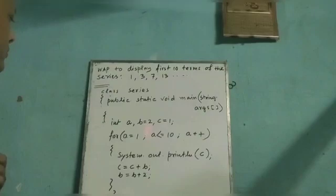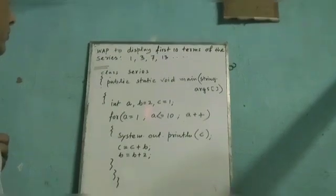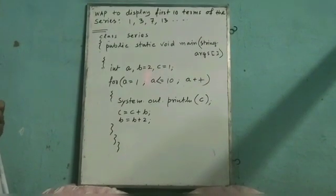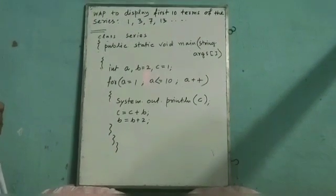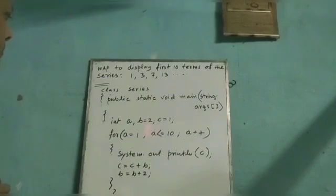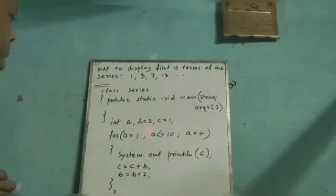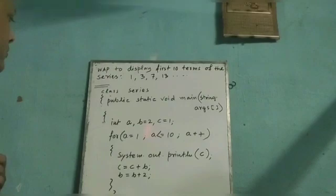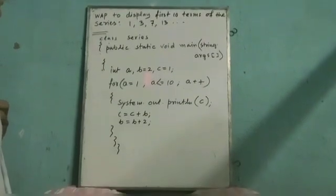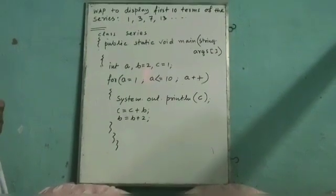The next time c should become 7, so c has to increase by 4. b is now incremented by 2, so b from 2 it is now 4, so next time b will become 6 and c will be incremented by the value of b. In my next video I will explain you some more programs.